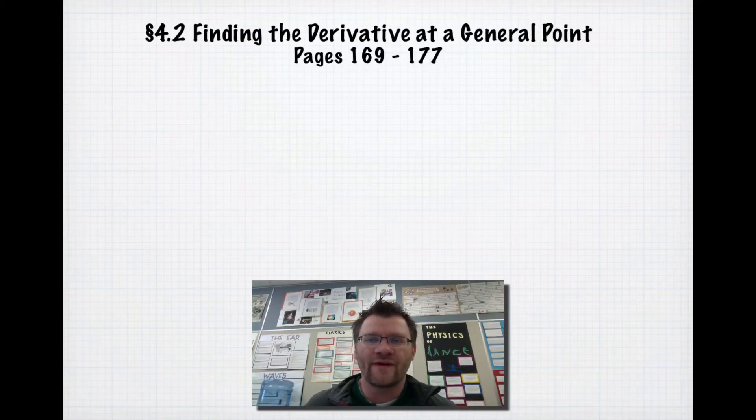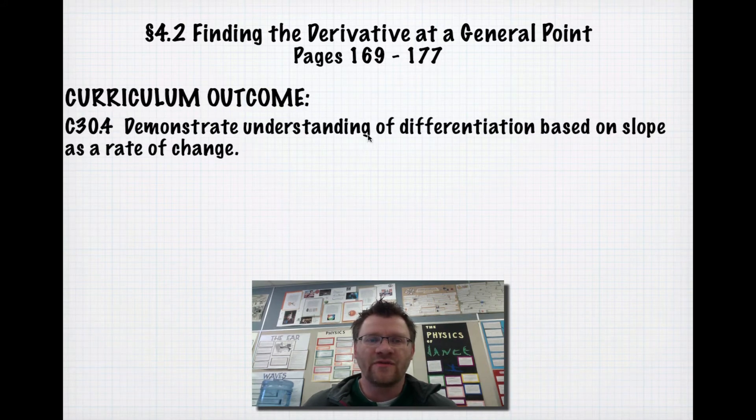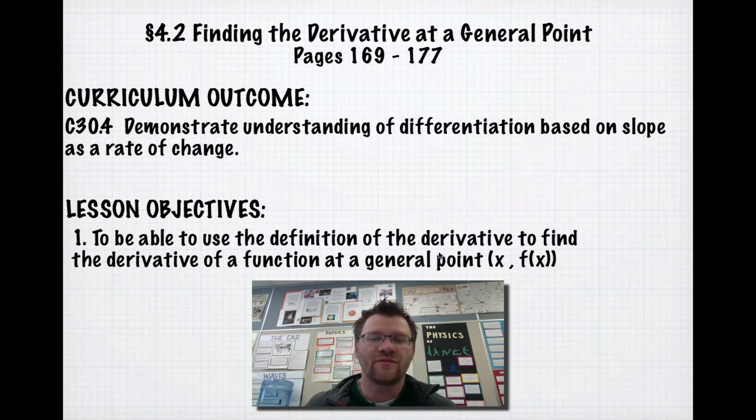Today's lesson is 4.2, finding the derivative at a general point, on pages 169 to 177 in your text. Our curriculum outcome is to demonstrate an understanding of differentiation based on slope as a rate of change. Our lesson objective today is to be able to use the definition of the derivative to find the derivative of a function at a general point, which we're going to be calling x, f of x.